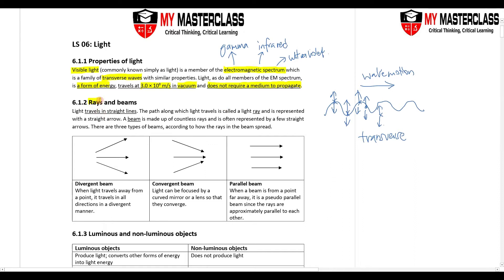New terms: ray and beam. Remember that light travels in straight lines — always in straight lines. The path is called a light ray, and we represent it using a straight arrow. Since light travels in straight lines, the path will be straight, which is why we use a straight arrow.